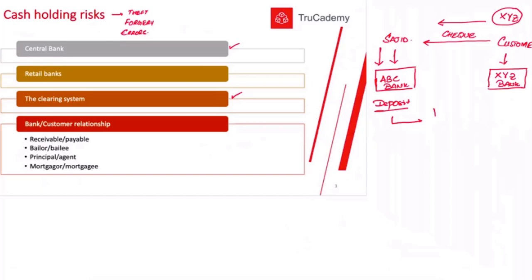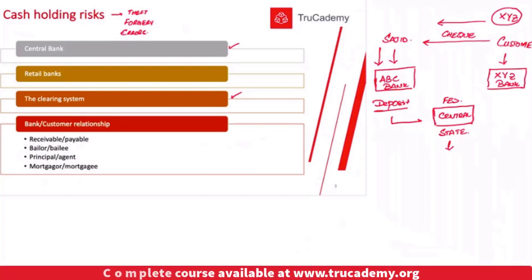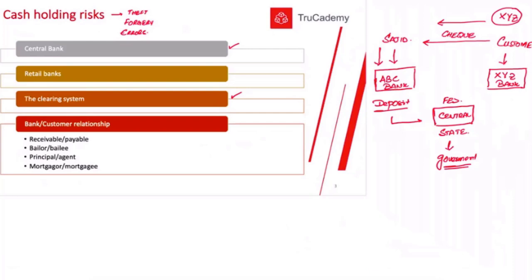So ABC Bank will take the check and go to another bank, which we call the central bank. In the UK and European countries we call it the central bank; in the USA it's called the Fed — Federal Reserve; and in Pakistan or India it's called the State Bank. This is the main bank responsible for operating all transactions and functions of all private banks in the country, and it is mostly government-owned. Within this central bank there is a department called the clearinghouse.